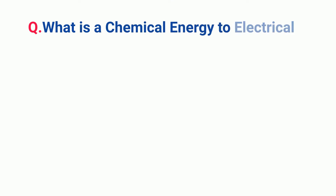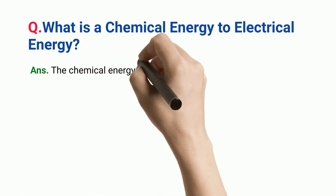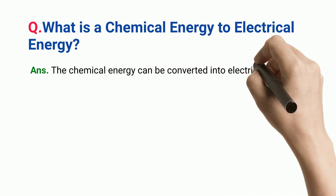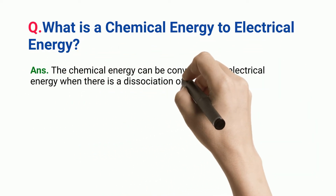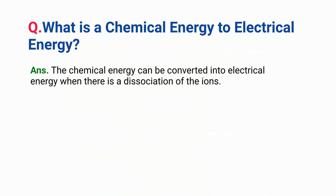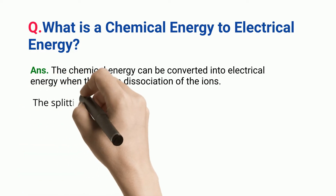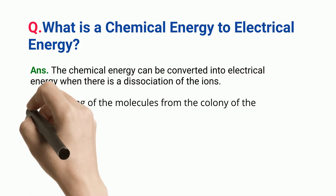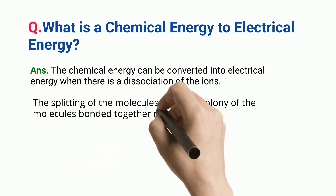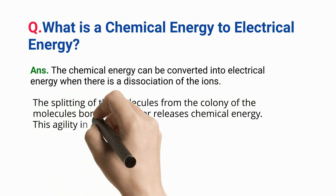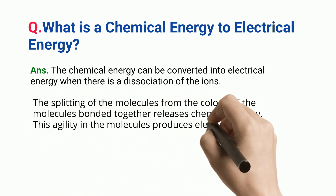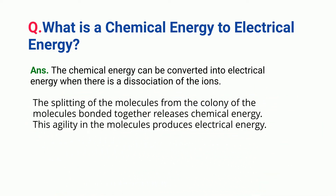What is chemical energy to electrical energy? The chemical energy can be converted into electrical energy when there is a dissociation of the ions. The splitting of the molecules from the colony of the molecules bonded together releases chemical energy. This agility in the molecules produces electrical energy.